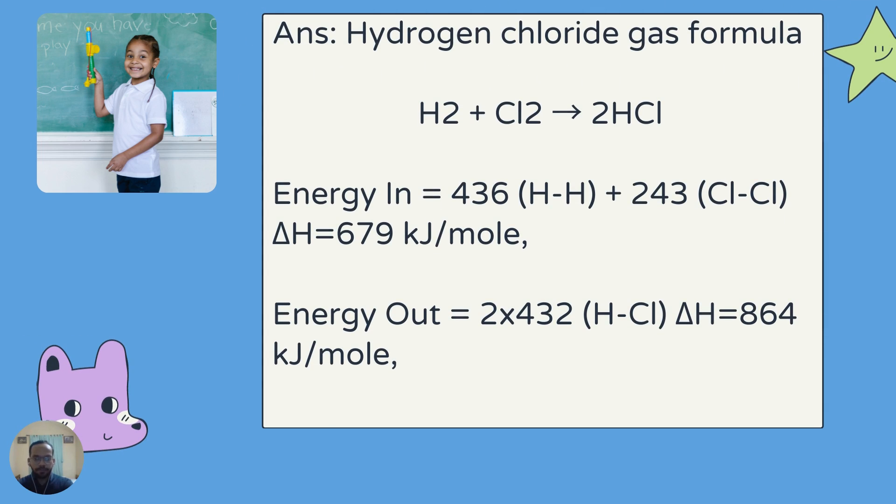Let's move on to the answer. Here are some values given like 436, 243, and 432. These values are for bond energy, and we don't have to memorize these energies or values, because this will be given to us in a table.